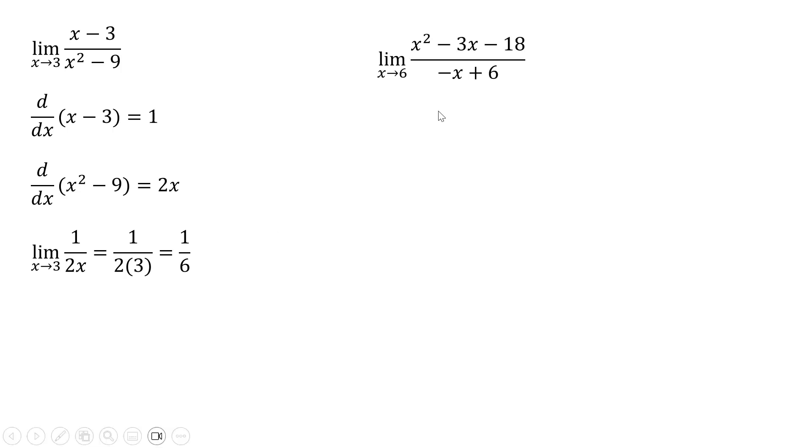Here's another example. First we want to check if this is an indeterminate form of 0 over 0. Plugging 6 into the numerator we get 36 minus 36, or zero. Plugging 6 into the denominator we get the same thing, we get zero.